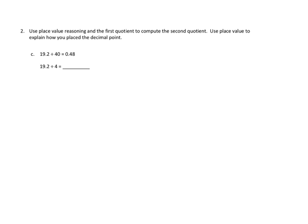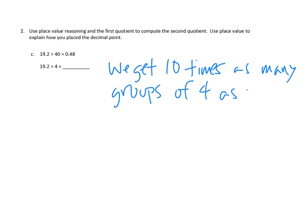So I think we would just say, we're going to explain. We get 10 times as many groups of 4 as when we grouped by 40. And so this, 19.2, this result, if we just multiply that times 10, we'll get our new answer. If we multiply this number times 10, everything will move one place value to the left. So our tenths will become ones, and our hundredths will become tenths. And we're done.